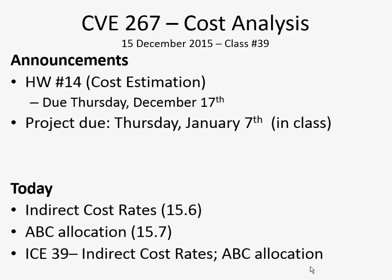So what we're going to be talking about today is indirect cost rates and something called ABC allocation, activity-based costing. These are different ways of accounting for indirect costs. Remember, indirect costs are those that are not easily attributable to a specific activity. So if your business is trying to build homes, it's easy to know the amount of wood required, how much tile, concrete, roofing materials, and the quantity of labor. Anything else that's not so easy to assign to the construction of one unit — those are the indirect costs. These two methods are ways of assigning indirect costs.